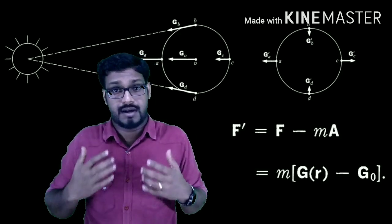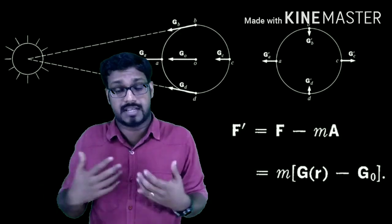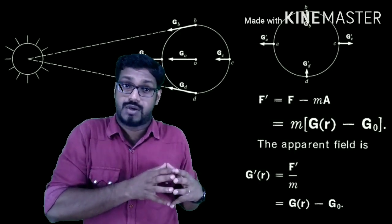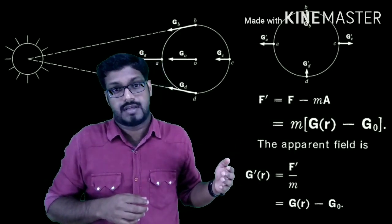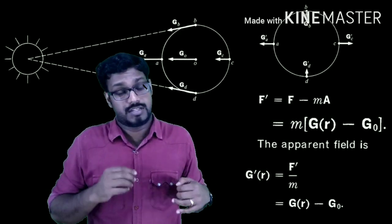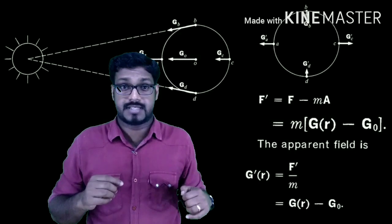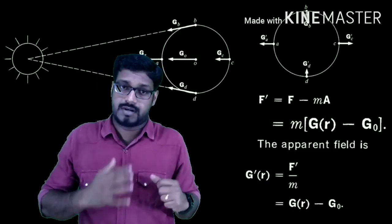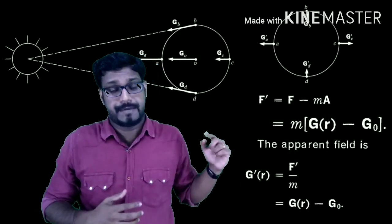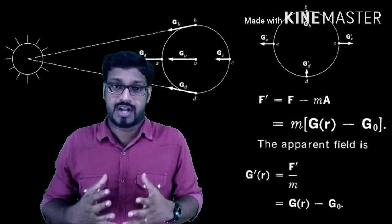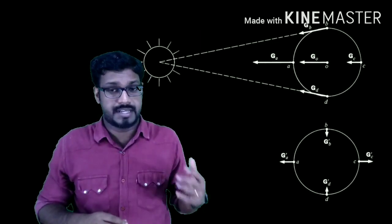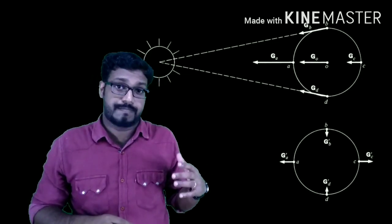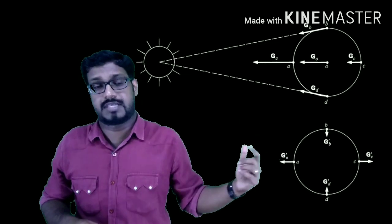If you divide force by mass you get the gravitational field or acceleration due to gravity. So the acceleration due to gravity at a particular point r when observed from Earth is: g'(r) = g(r) − g₀. Now let's calculate the acceleration due to gravity of the Sun when observed from Earth at the different points A, B, C, D. The accelerations at A, B, C, D observed from Earth's frame are g'_A, g'_B, g'_C, and g'_D.